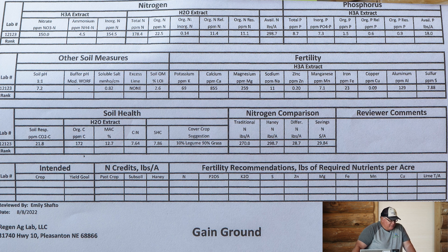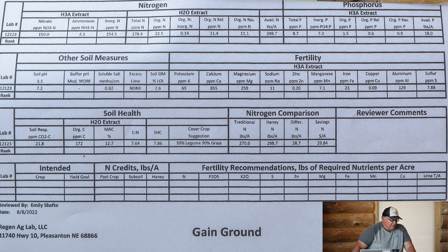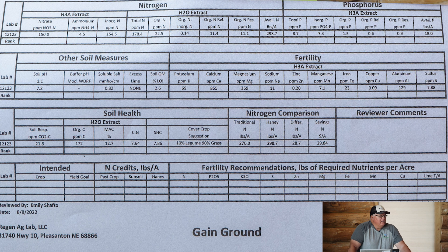Slide over to the column on the very left where it says nitrate parts per million. One has 4.8 parts per million. The other sample is 150 parts per million of inorganic nitrate nitrogen — that's water soluble and it's going to leach away if you get moisture.